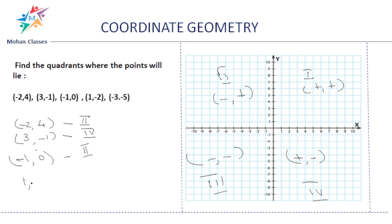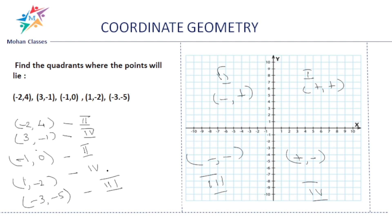For (1, −2): x is positive and y is negative — plus, minus — so it comes in the fourth quadrant. For (−3, −5): both x and y are negative — minus, minus — so it comes in the third quadrant. To summarize: plus, plus is first quadrant; minus, plus is second quadrant; minus, minus is third quadrant; plus, minus is fourth quadrant. That is it.